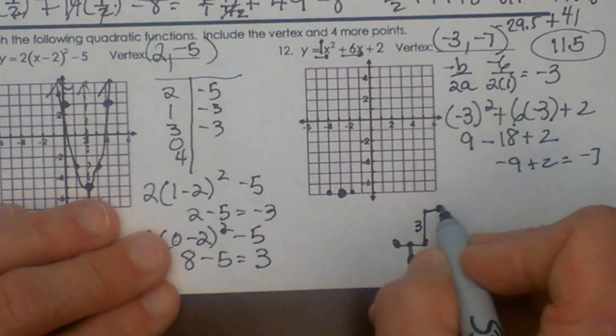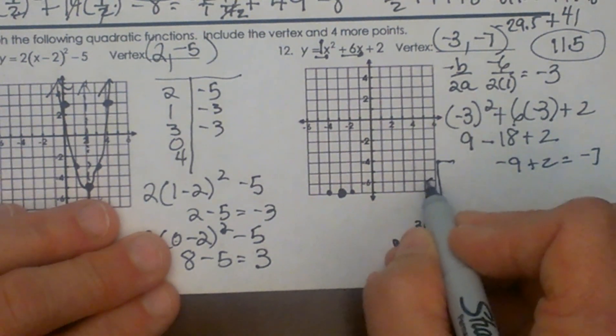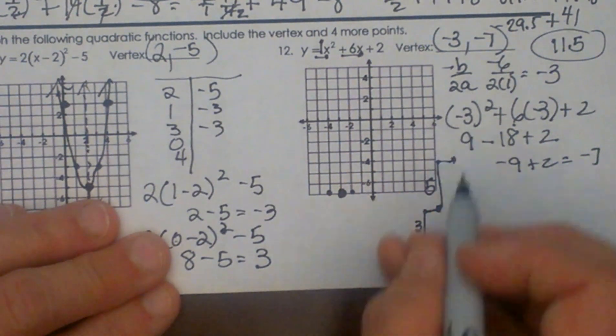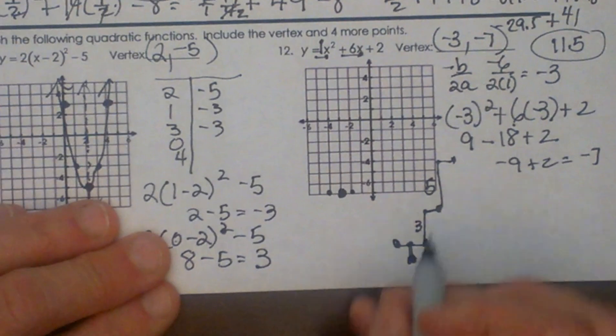And then to get the next output you're going to go up 5 and over 1. And you're going to go up by increasing odd integers. Because that's the pattern of quadratics.